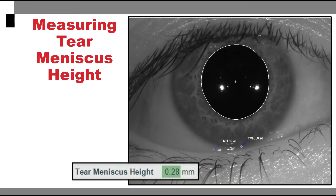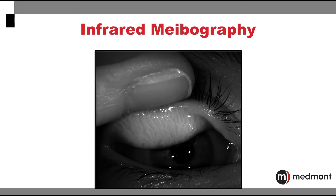Another dry eye analysis that we can perform with the Medmont Meridia is the ability to measure very accurately the tear meniscus height. Using infrared light, the Medmont Meridia is able to image the meibomian glands, giving you the ability to assess the health and monitor your dry eye treatment over time.